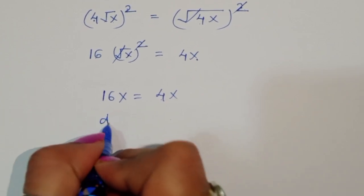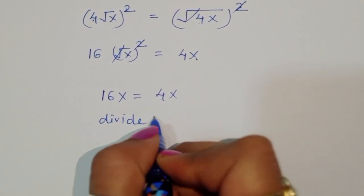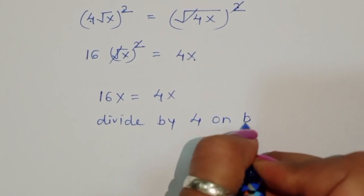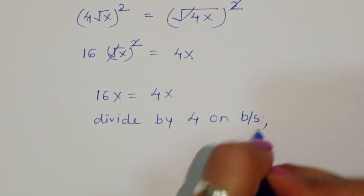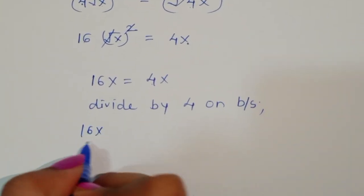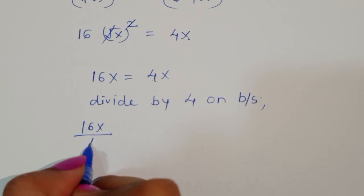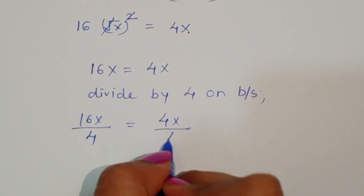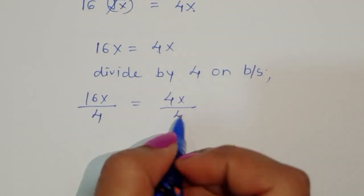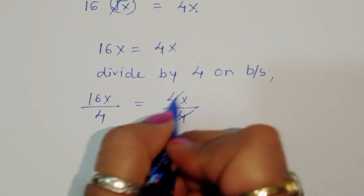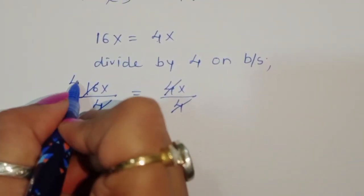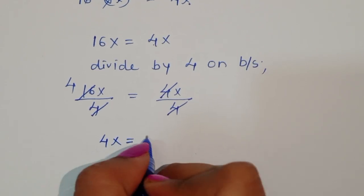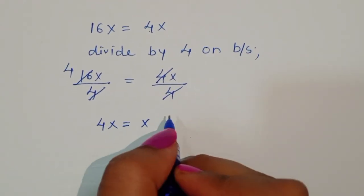Now we divide both sides by 4. So 16x divided by 4 is equal to 4x divided by 4. The 4 cancels from 16, so we get 4x is equal to x.